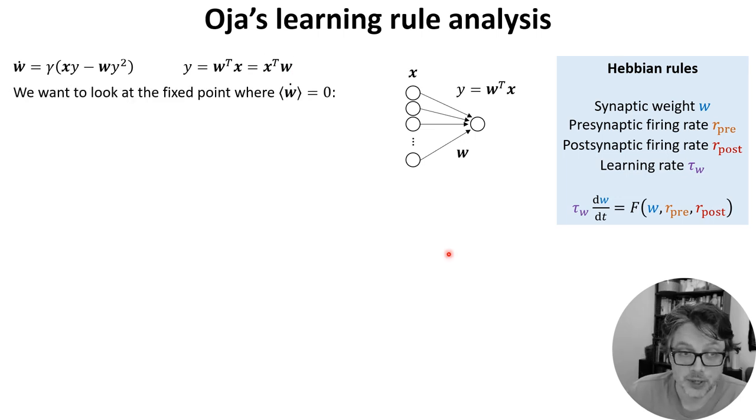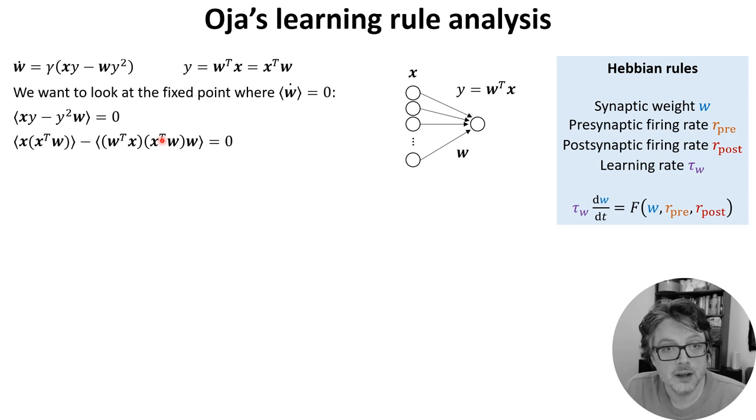We're interested in the fixed point after a long period of time when no more learning is happening. In other words, when on average, the rate of change of W is zero. And I'm going to use these angle brackets to mean that average. Expanding out W dot, we get this equation. Replacing Y with either X transpose W or W transpose X, you get this. And you'll see why I did this in a minute.